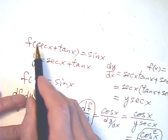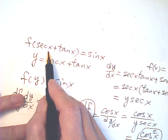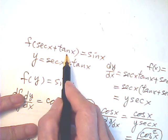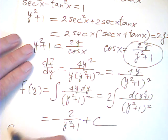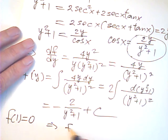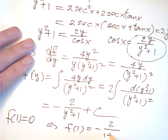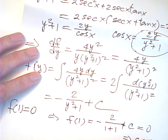Now to find C, we go back to the original equation. Let x = 0: sec 0 = 1, tan 0 = 0, so y = 1, and sin 0 = 0, giving f(1) = 0 as the initial condition. So −2 over (1 + 1) + C = 0, which means C = 1.